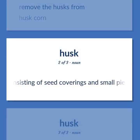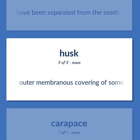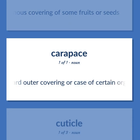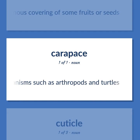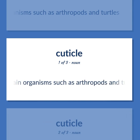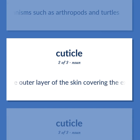Material consisting of seed coverings and small pieces of stem or leaves that have been separated from the seeds. Outer membranous covering of some fruits or seeds. Hard outer covering or case of certain organisms such as arthropods and turtles.